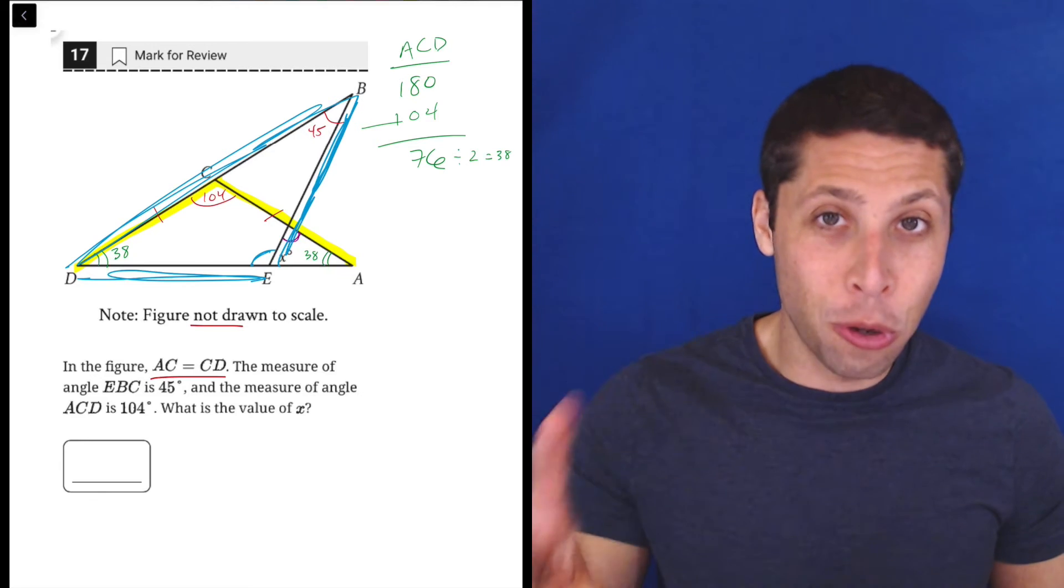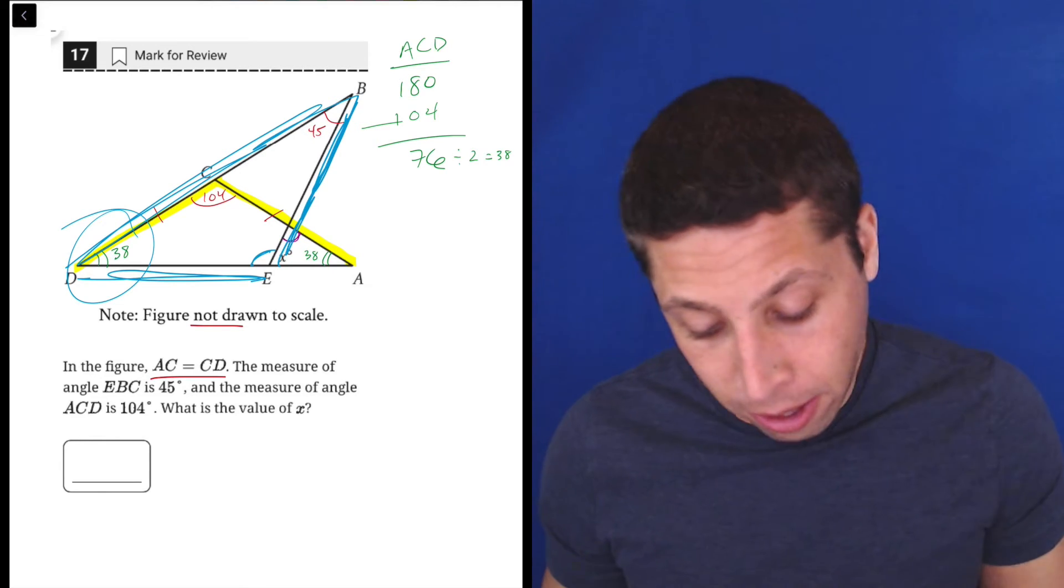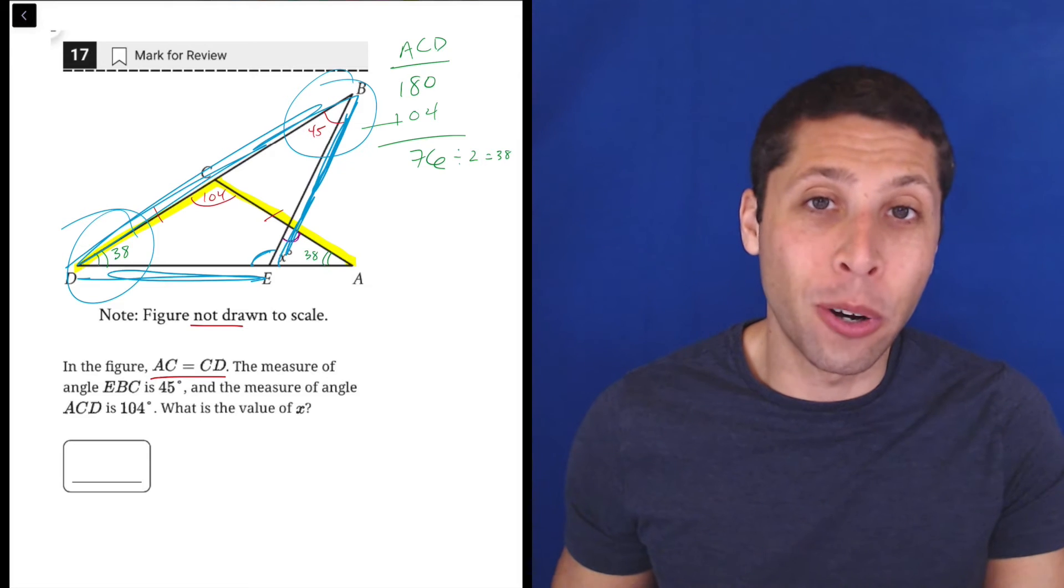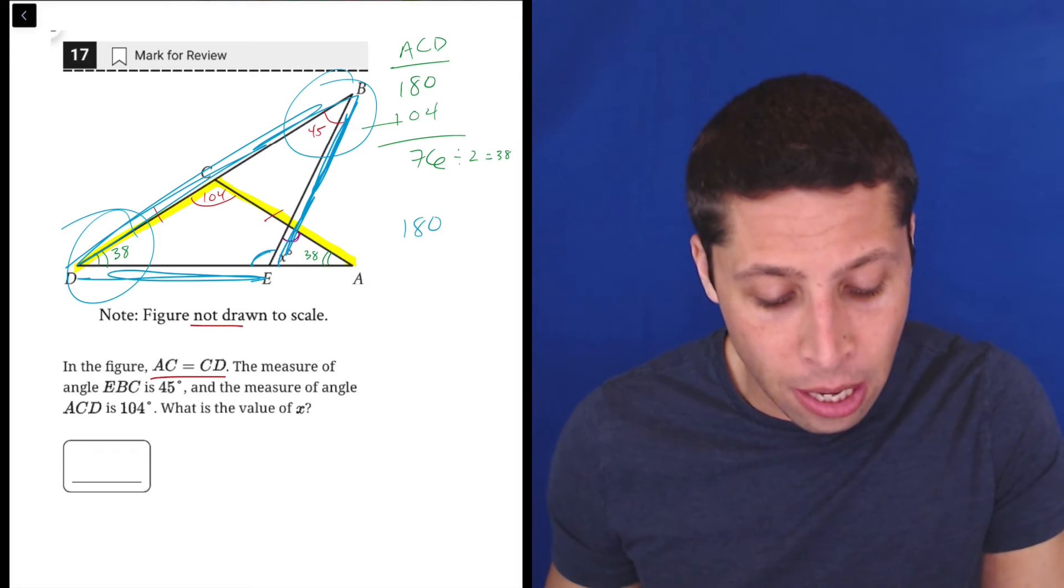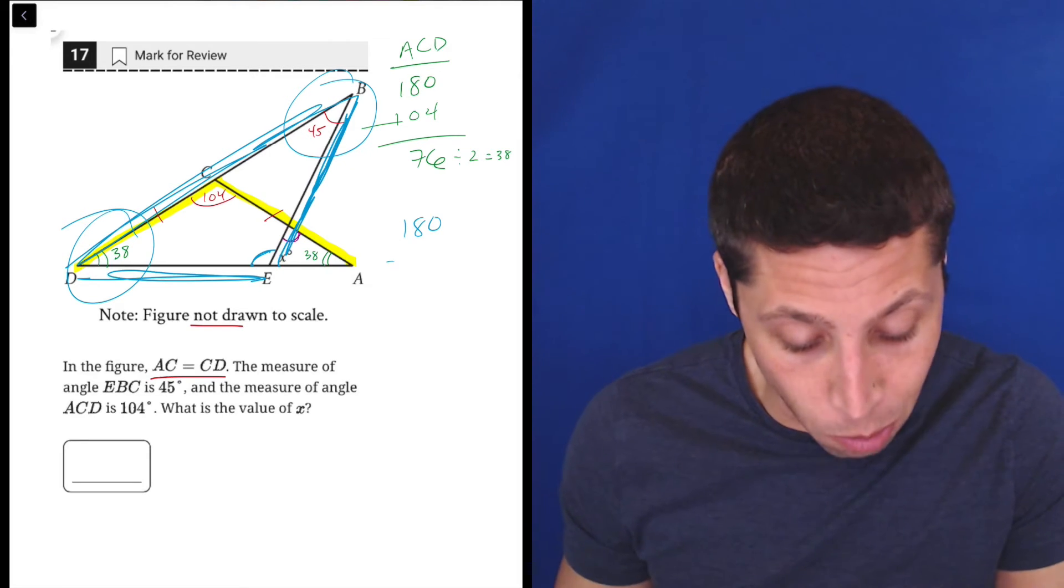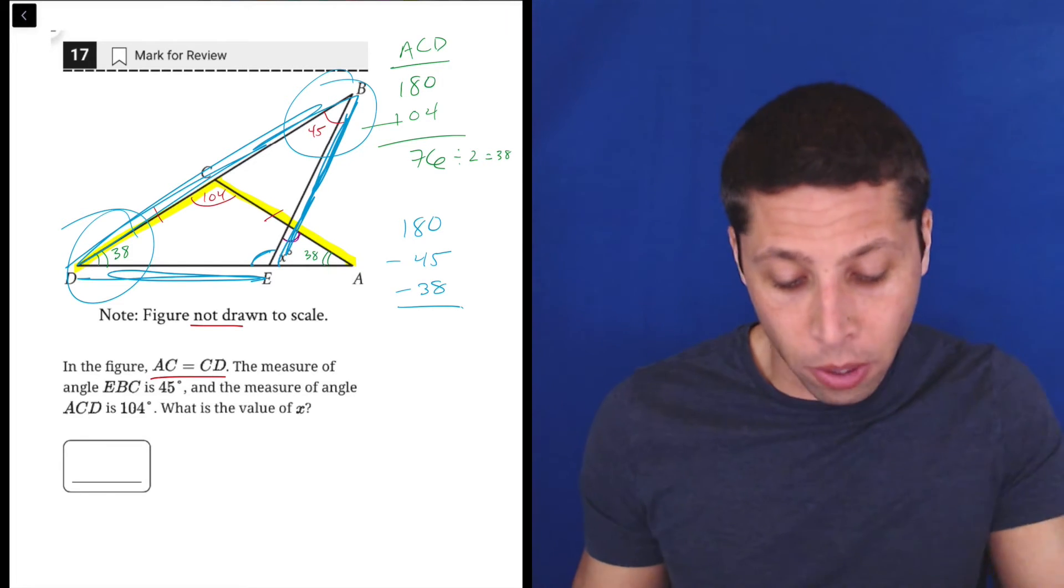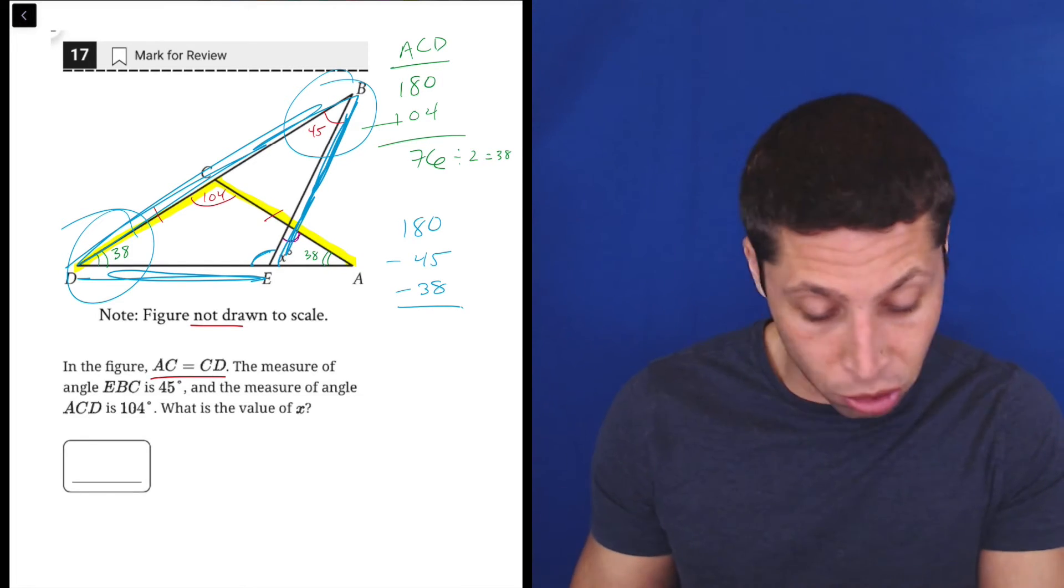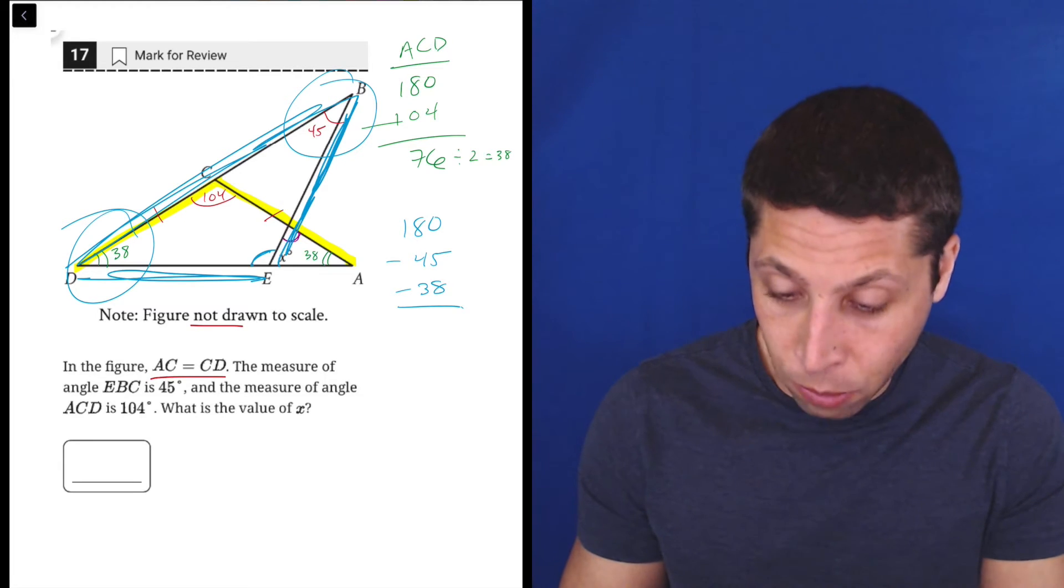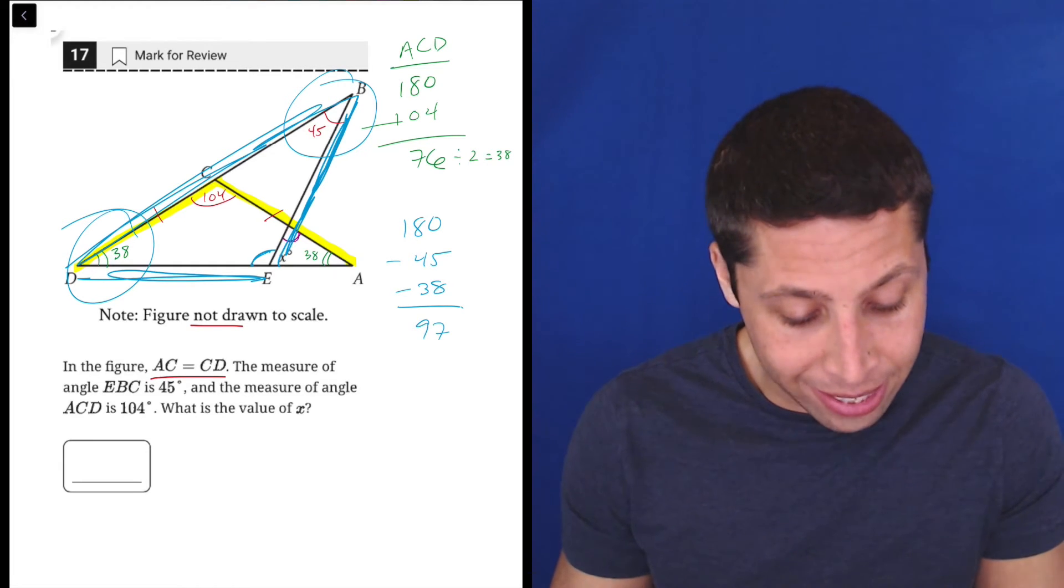I have two of the angles, I have one here at 38, I have one here 45. So that means I know by subtraction that I can get that last one. So 180 minus the 45 minus the 38, whatever's left over is that angle by E. So let's just do that 180 minus 45 minus 38 is 97.